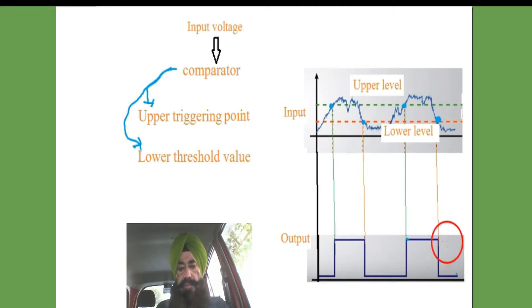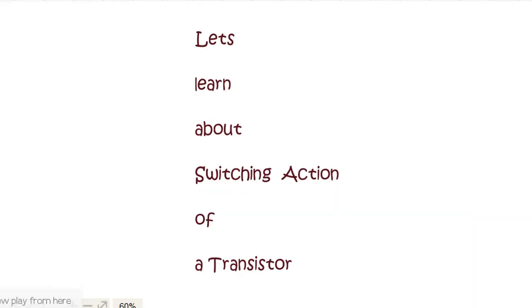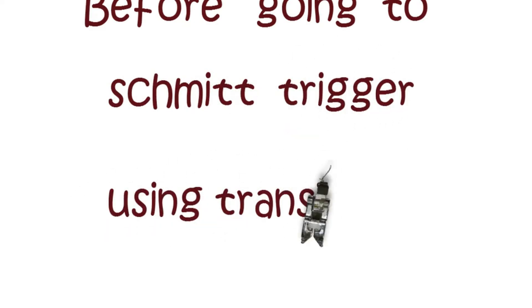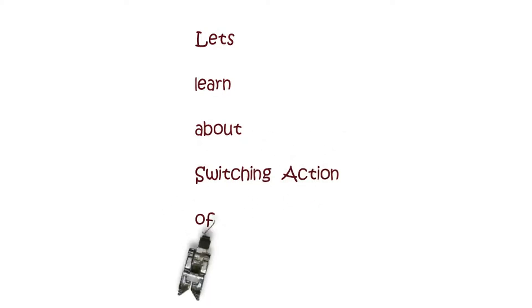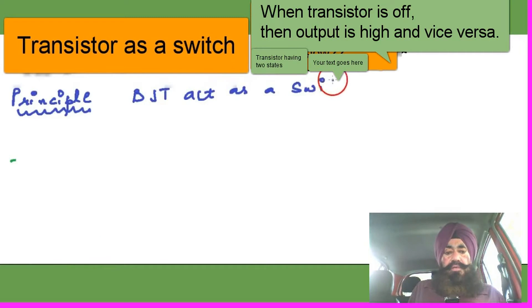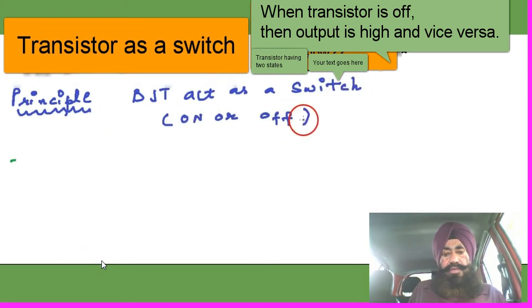This is the principle of the Schmitt Trigger. Hello dear friends, today I'll discuss with you how the bipolar junction transistor acts as a switch — on or off like a toggling switch.